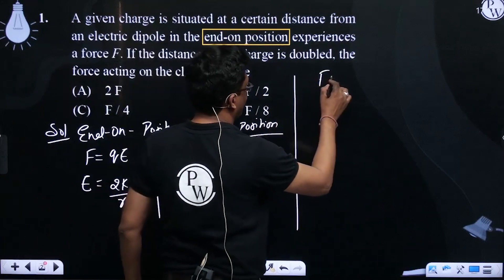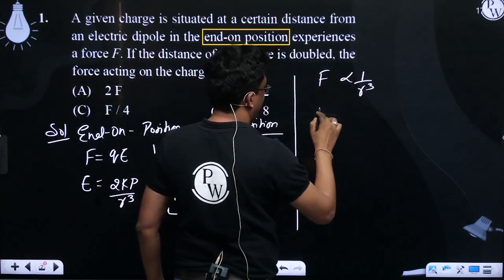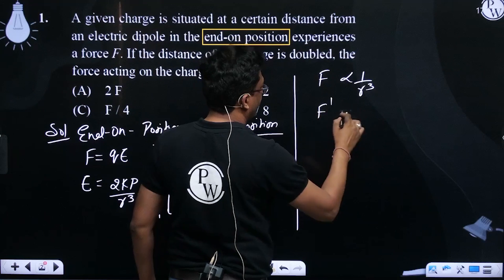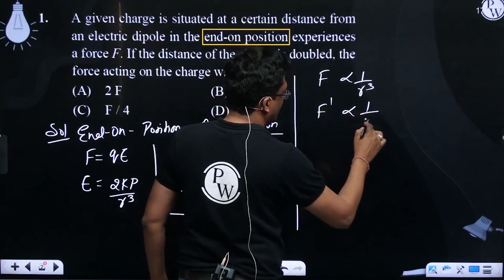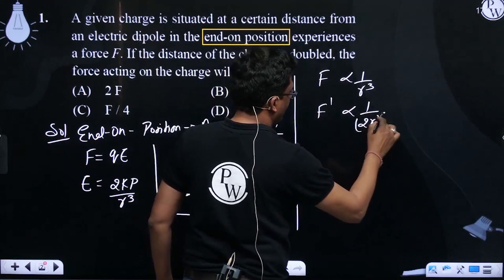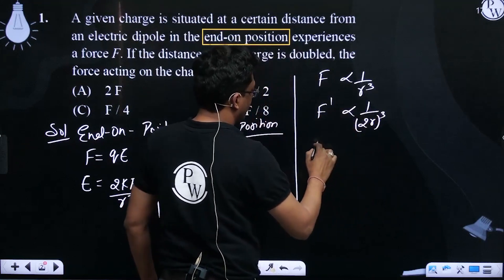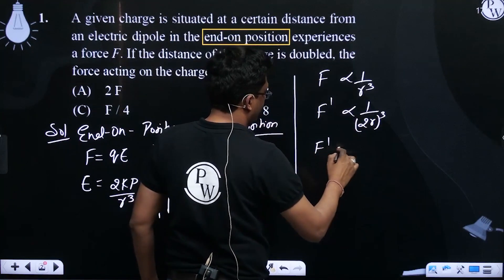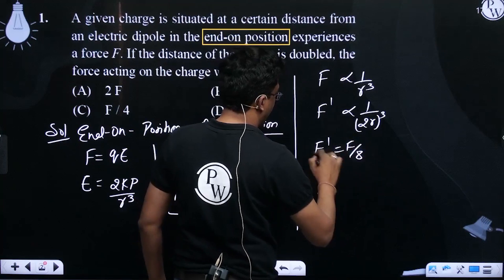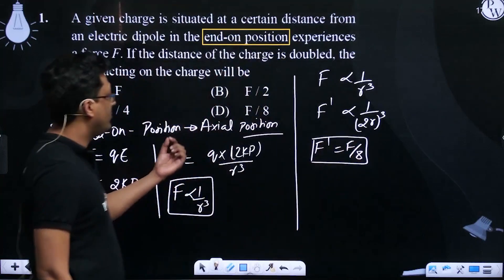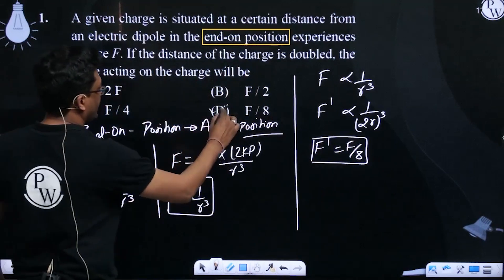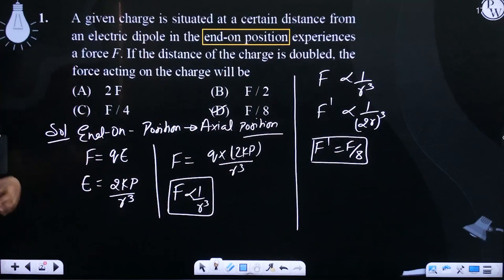So if we can see that distance, we have the first one that is your R cube and second case, in the second case which is F dash, we have the distance doubled, right? So what we see is F dash becomes F by 8, right? So we have the option for this, that will be option number D, F dash becomes F by 8.